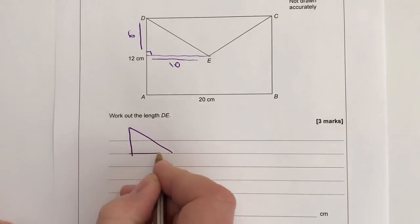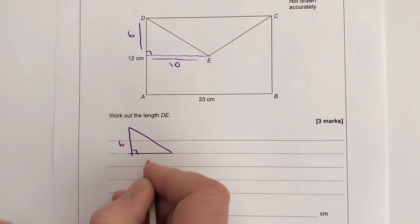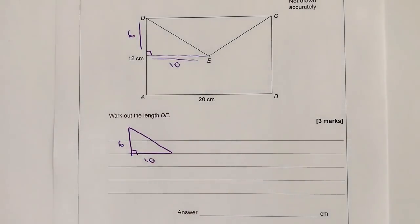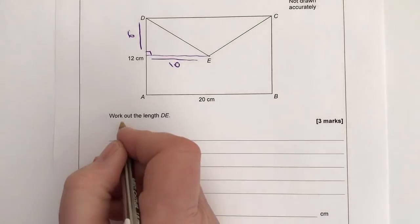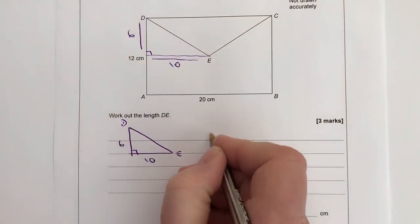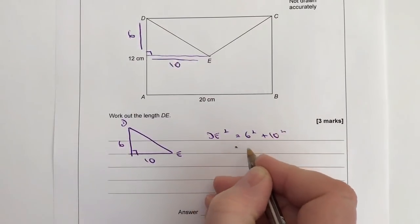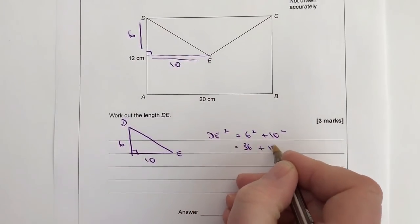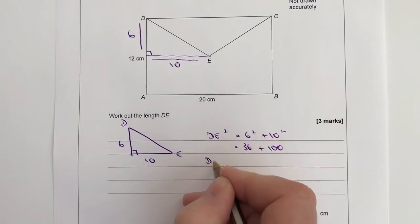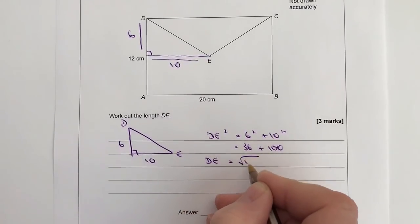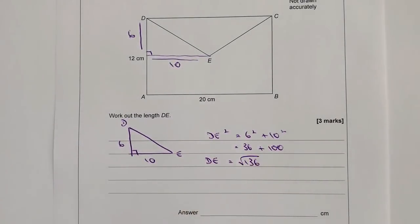So if I just put that into here, I've got then 6 and I've got 10. Now you might do it slightly differently to me. I would write DE squared equals 6 squared plus 10 squared. So that's 36 plus 100. So DE is going to be the square root of 136. Now if I pop that into my calculator, that's going to give me 11.662.